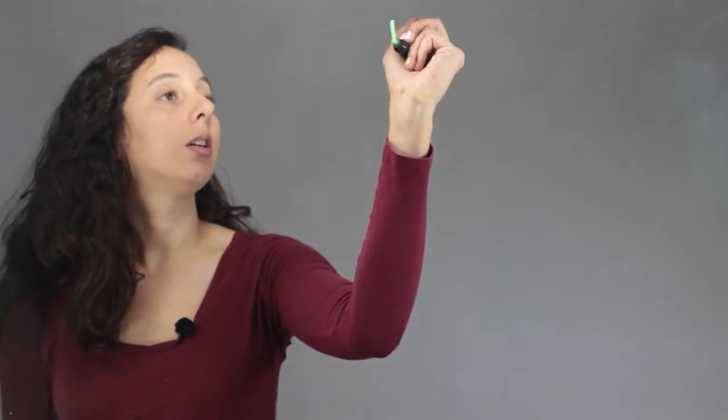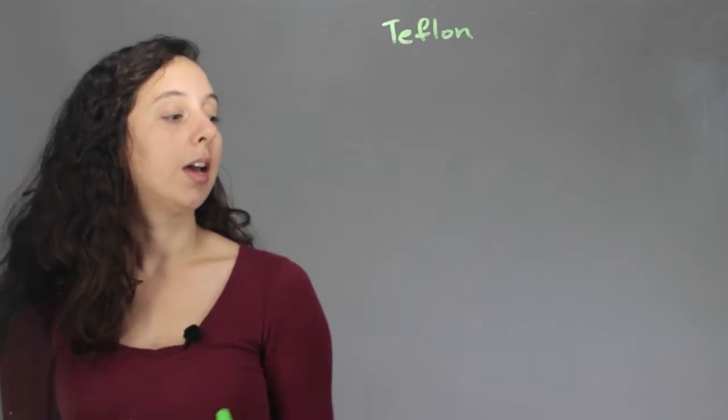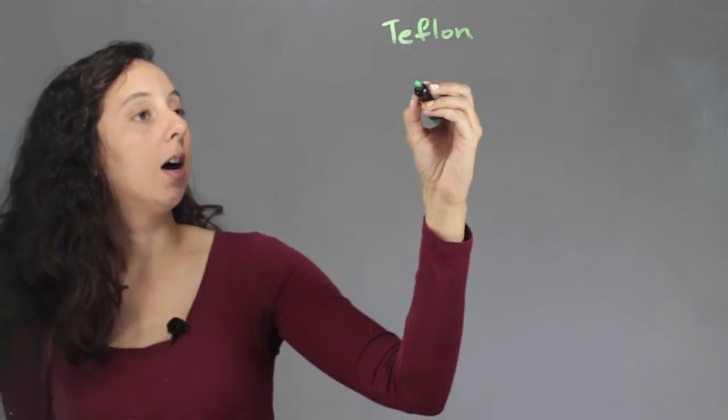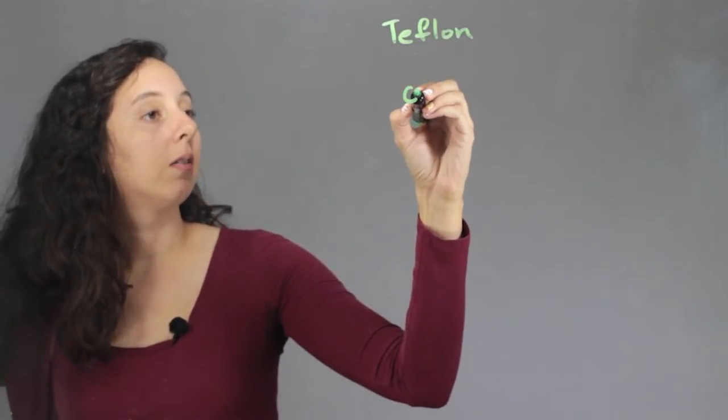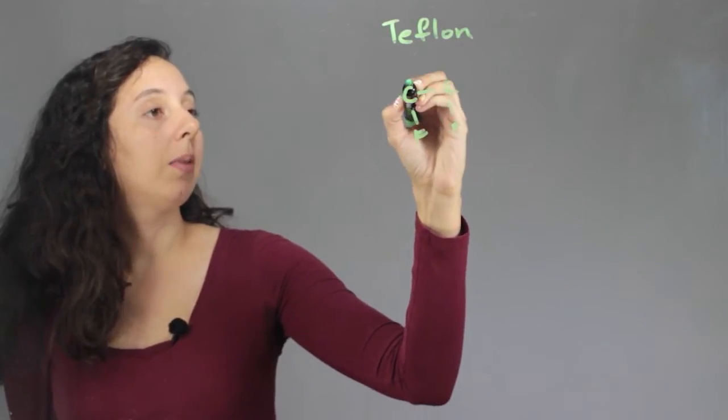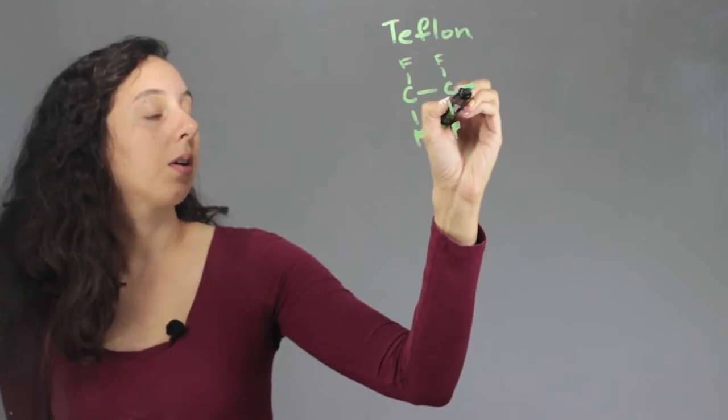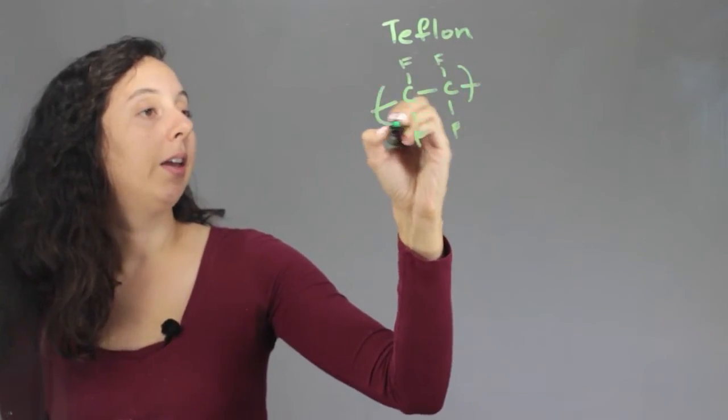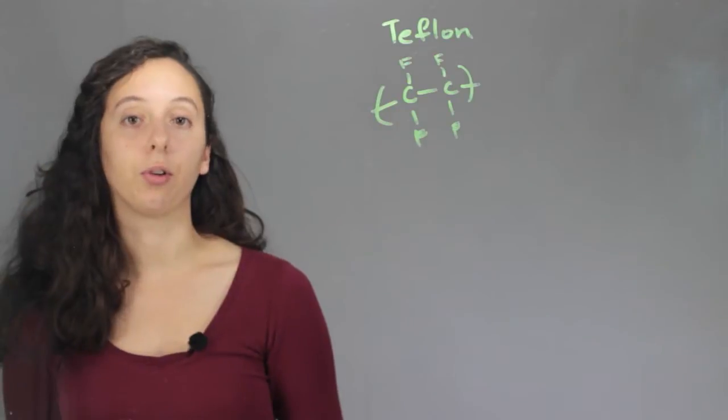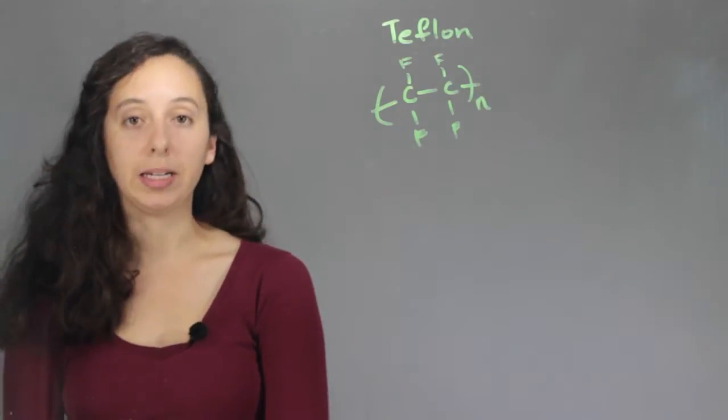It's actually called Teflon, and so Teflon consists of a repeating unit of a carbon bonded to one other carbon and then every other attachment is a fluorine. And so we put a little 'n' down here to show that it's repeating.